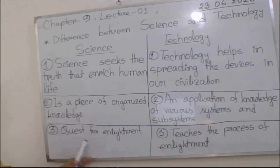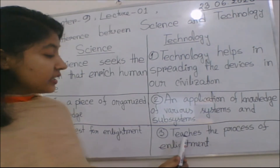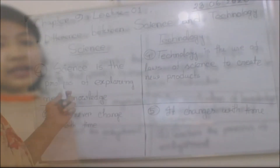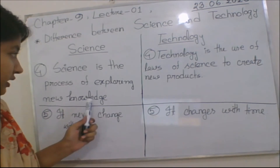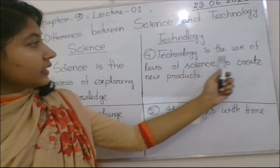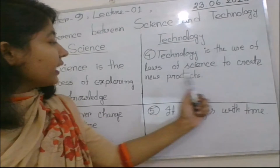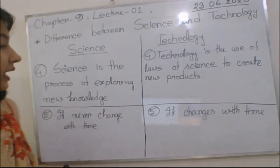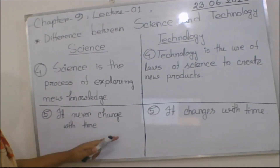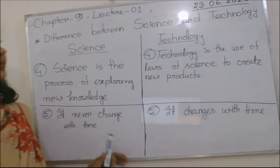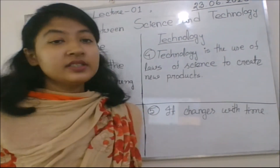Science is a quest for enlightenment, but technology teaches the process of enlightenment — the process of exploring new knowledge. Technology is the use of the laws of science to create new products. The last difference is that science never changes with time, but technology changes with time.